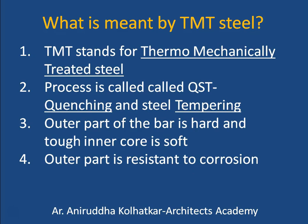TMT stands for thermo-mechanically treated steel. The process by which TMT steel is produced is called QST — quenching and steel tempering. In this process, the hot bar coming out from the mill is dipped into cold water at a certain pressure, causing the outer part of the bar to become hard while the inner part remains relatively soft. The bars are then left in the open to cool — this is called tempering.